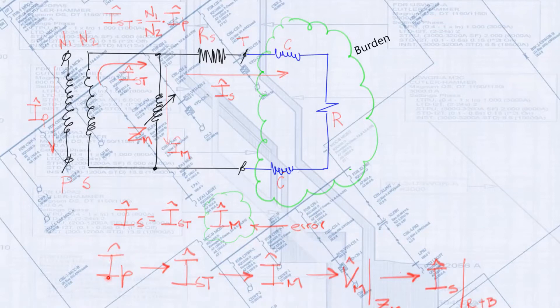The primary current IP drives the ideal total secondary current IST. The total secondary current IST drives a magnetizing current IM which causes the magnetizing voltage VM across a saturation characteristic. It is then this magnetizing voltage VM what drives the relay current IS through the burden and secondary winding. And by the way, I forgot to mention the CT secondary winding impedance RS, right here.